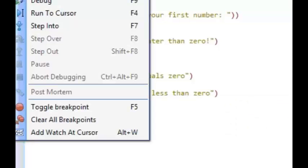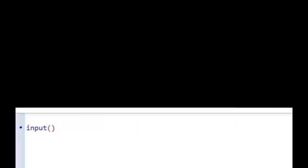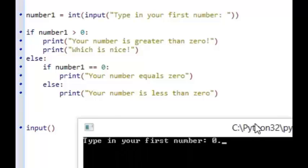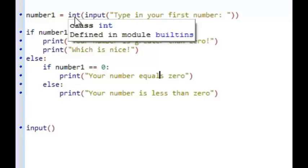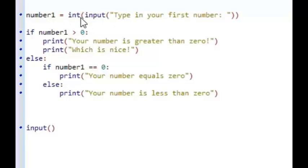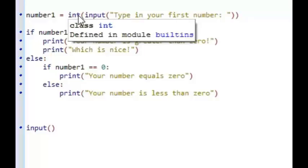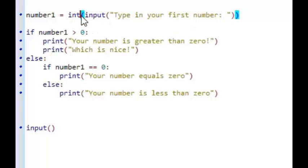Now, if I type in a decimal, let's see what happens. It doesn't like it. And that's because I've converted my input into an integer, a whole number. So it's expecting a whole number as an input. And if it doesn't find a whole number, then obviously it can't convert it into a decimal.